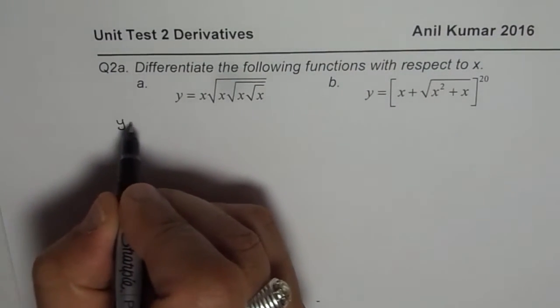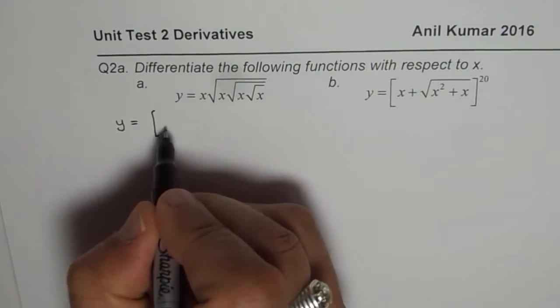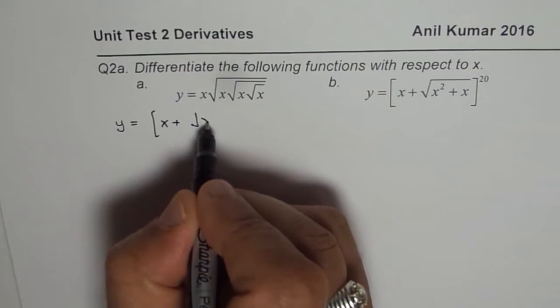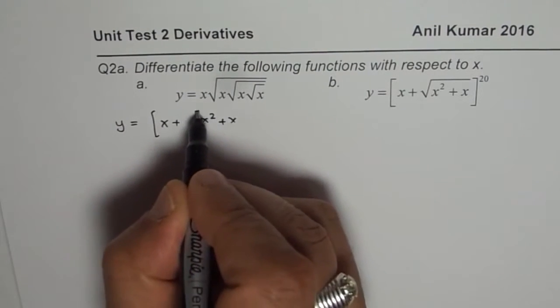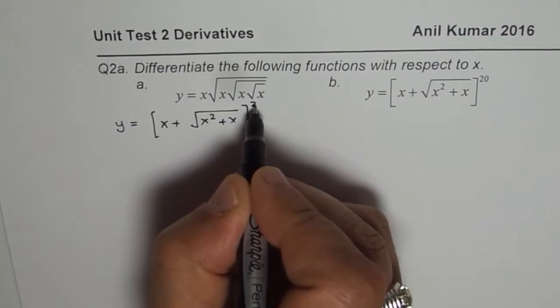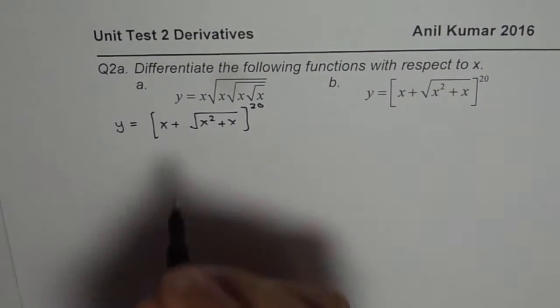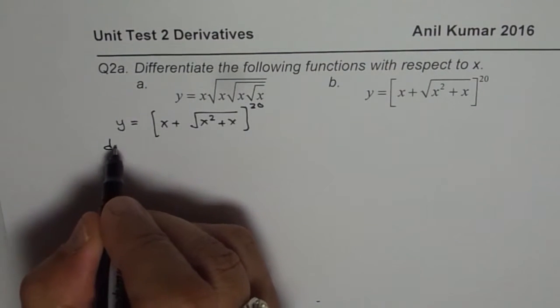It says y equals x plus square root of x squared plus x, everything to the power of 20. We need to differentiate this function. So let us do dy/dx.